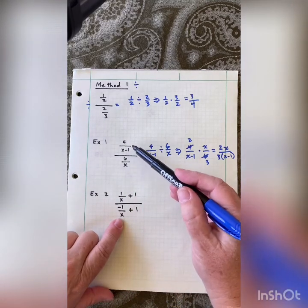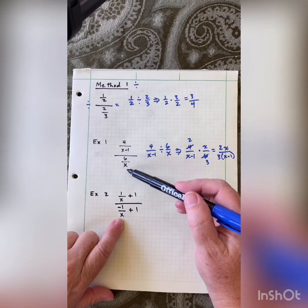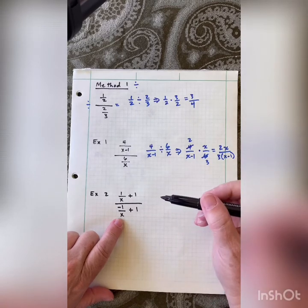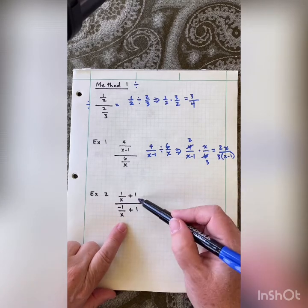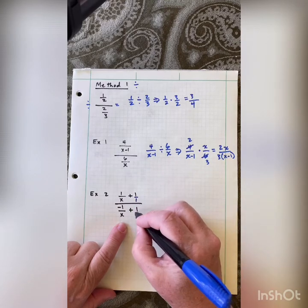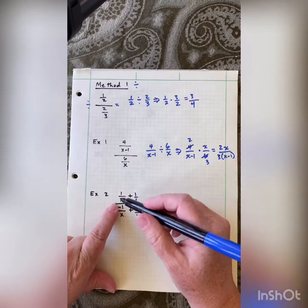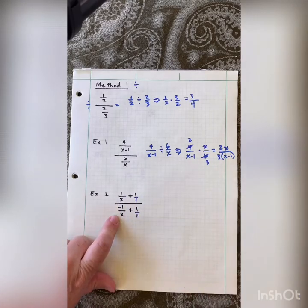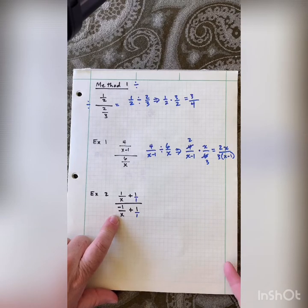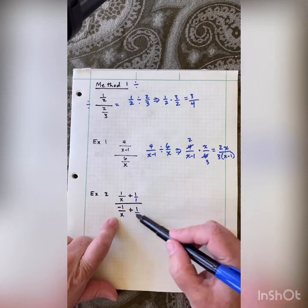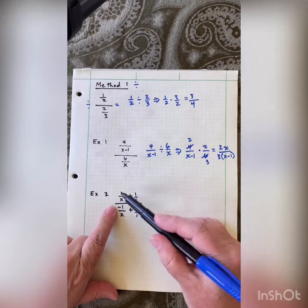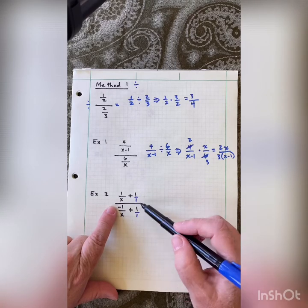I actually prefer method number one when I have one fraction over one fraction. But down here I have two fractions in the numerator and two in the denominator — I'd actually prefer to use method number two, but I'll show you method number one. We need to make one fraction on top and one fraction on the bottom, so we need to combine and find a common denominator. In this case the LCD is x.